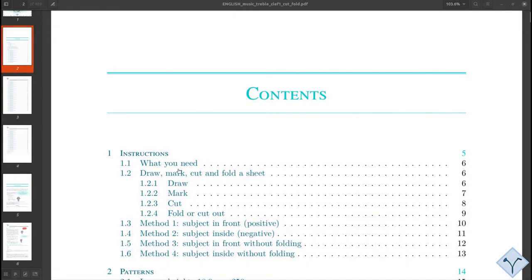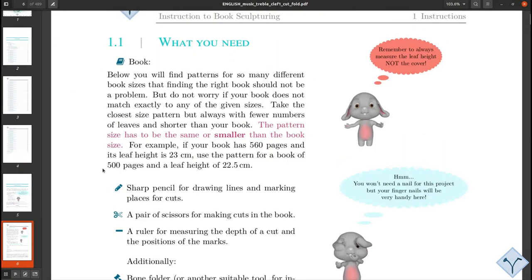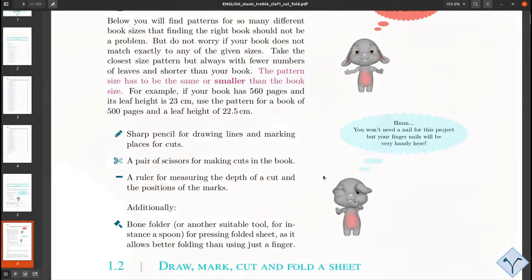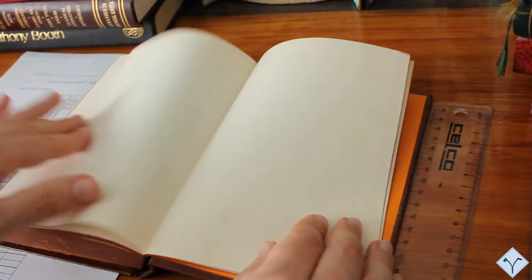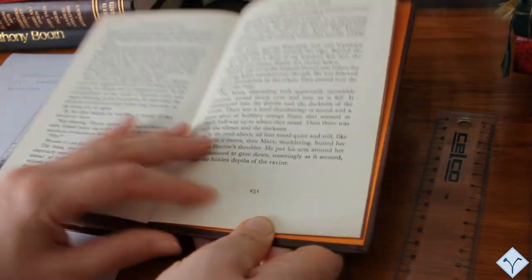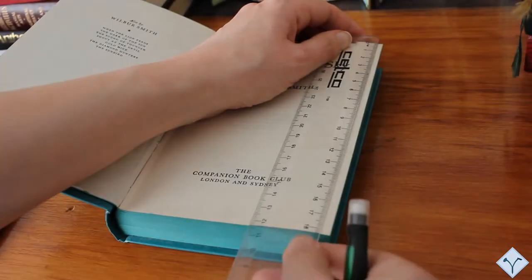In the section What You Need in the Nailit instructions, it is explained how to match a pattern to your book. But I am going to recap the principles here. You always have to use a pattern for fewer pages or the same number of pages as your book. The same stands for the height. The pattern height needs to be smaller or the same as your book height, more accurately, the leaf height of your book.